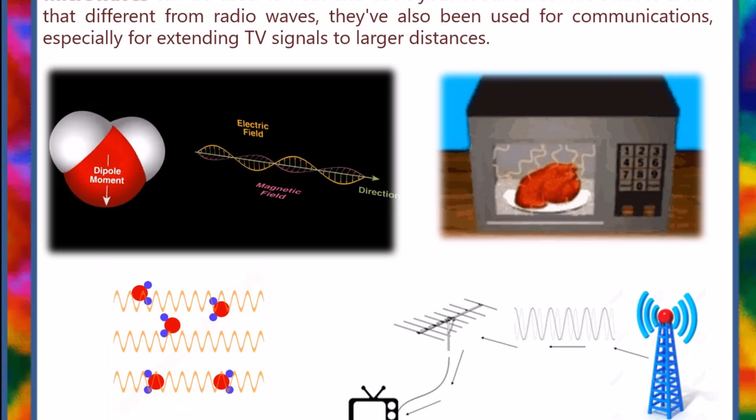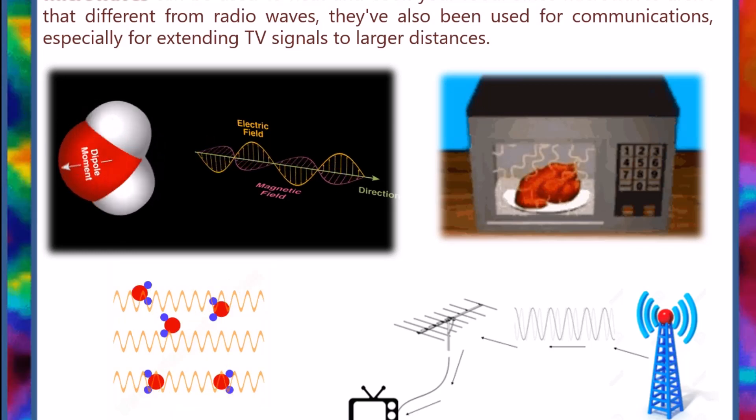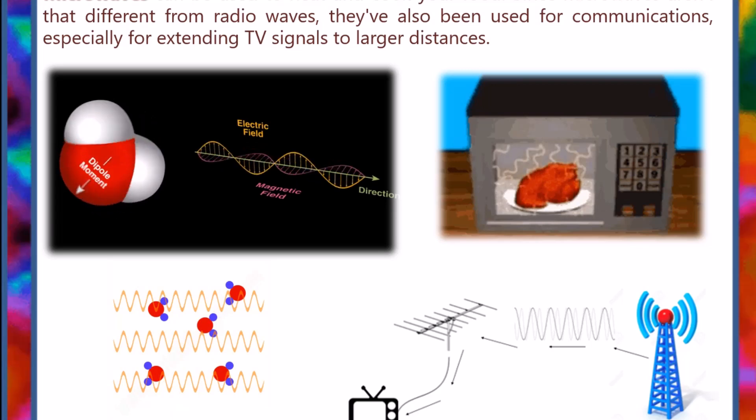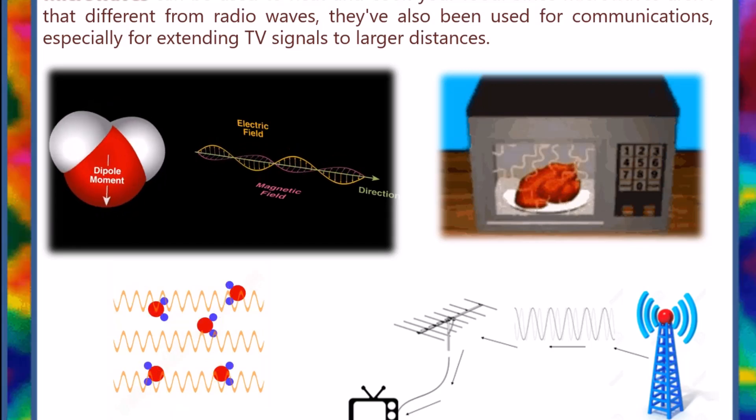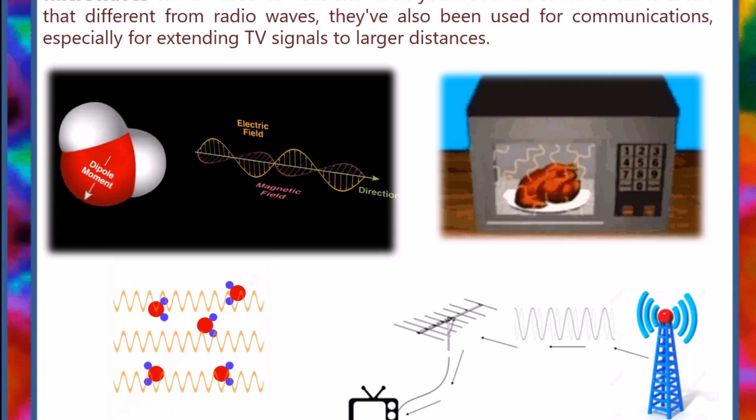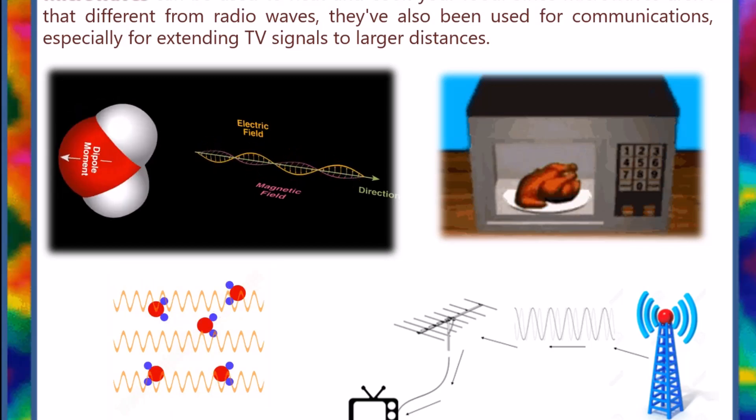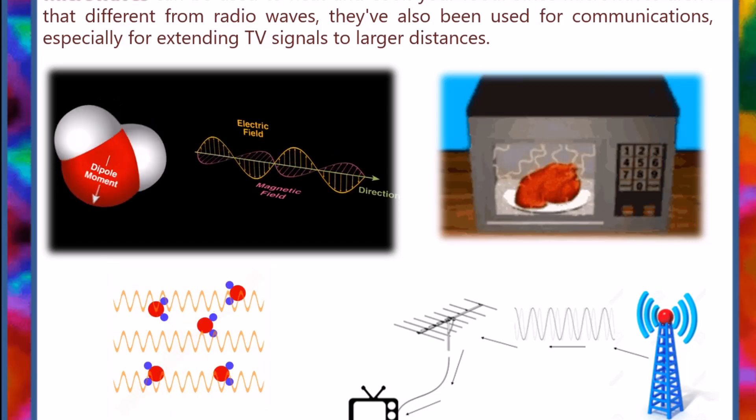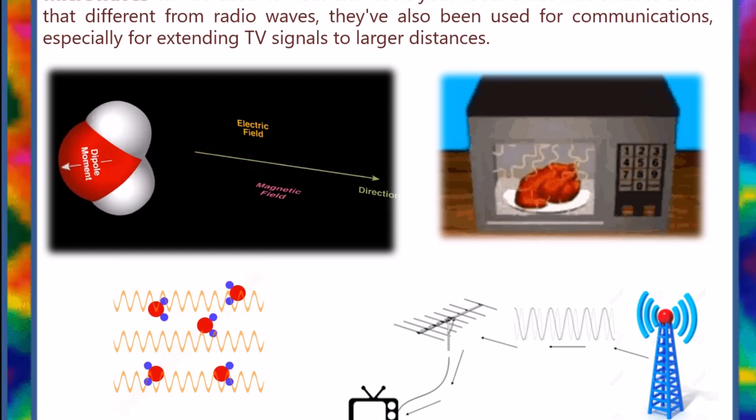Microwaves have probably the most obvious application in a microwave. Microwaves can be used to heat and cook your food. Since microwaves aren't that different from radio waves, they've also been used for communications, especially for extending TV signals to larger distances.